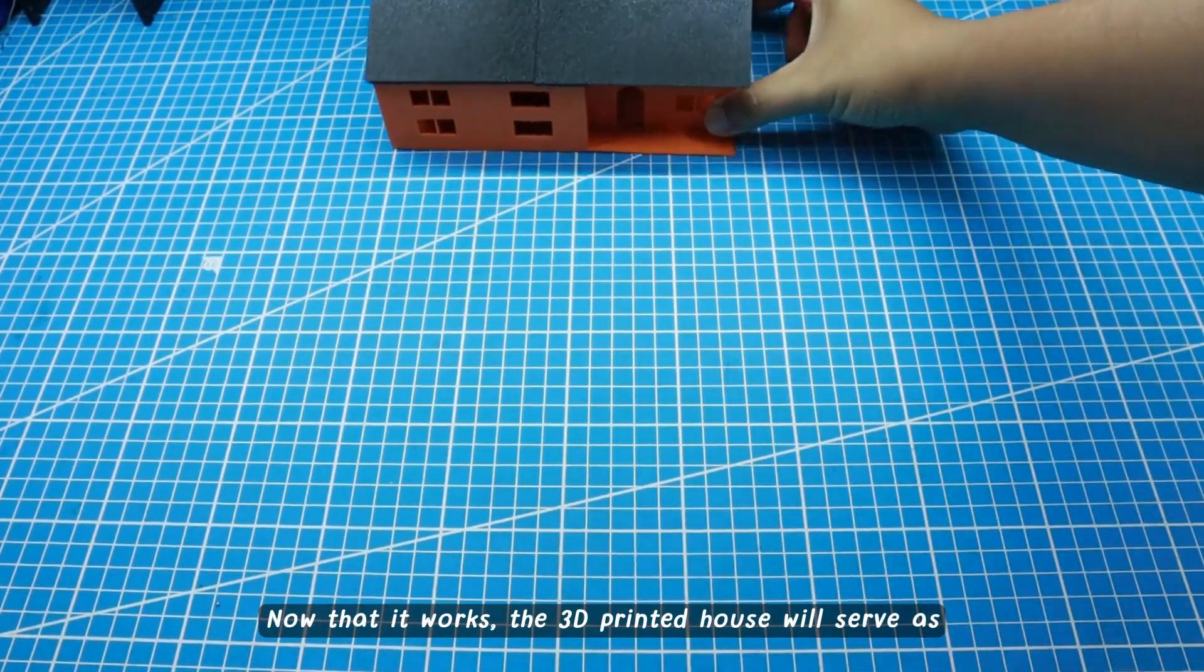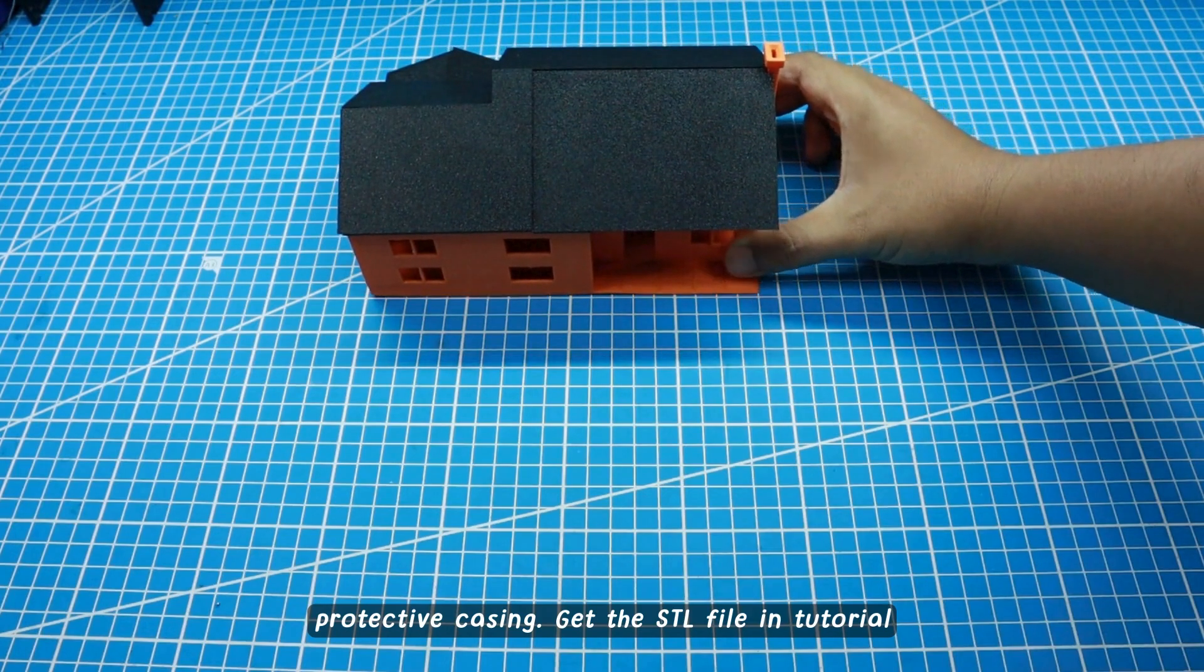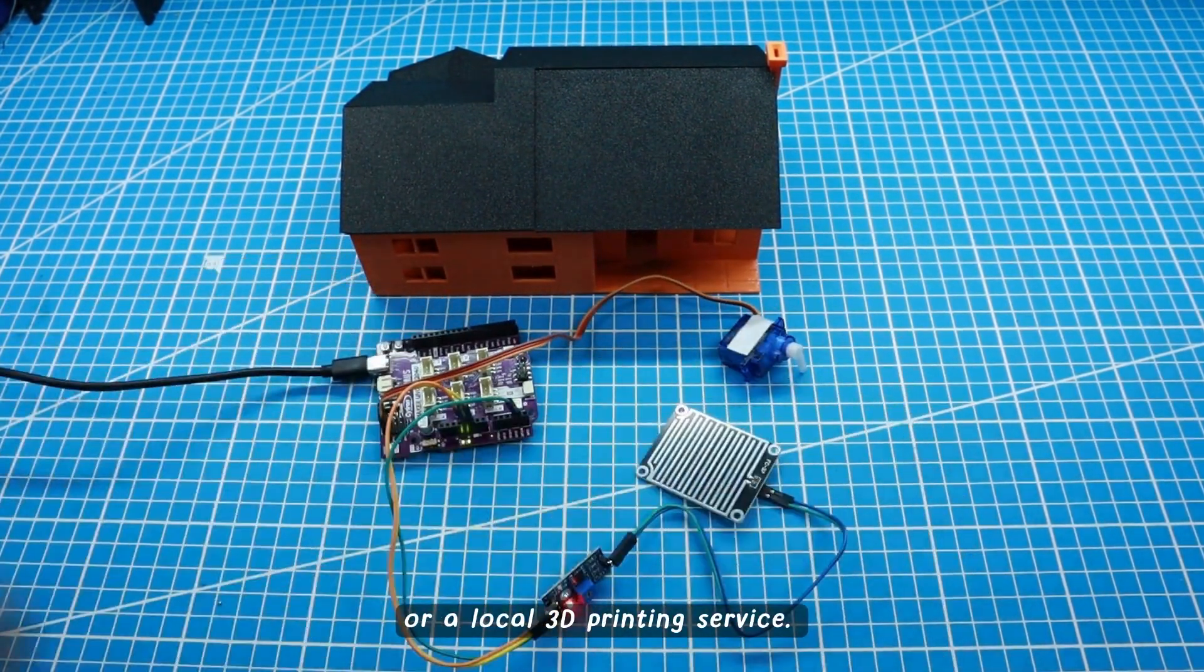Now that it works, the 3D printed house will serve as a protective casing. Get the STL file in the tutorial below, then 3D print it using your own printer or a local 3D printing service.